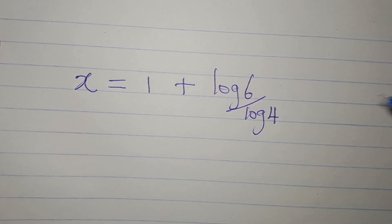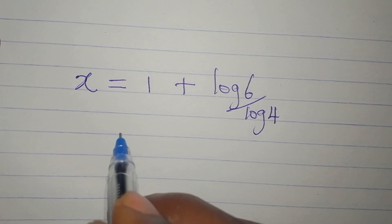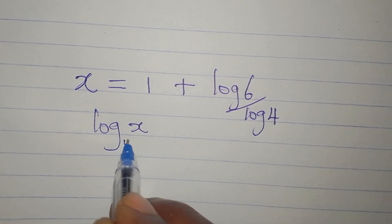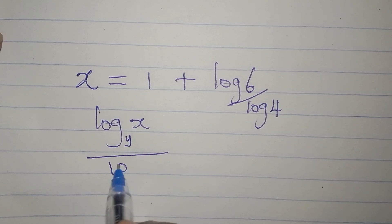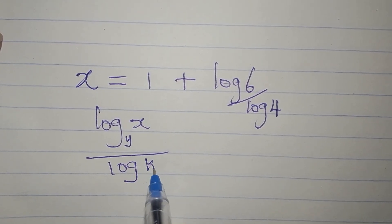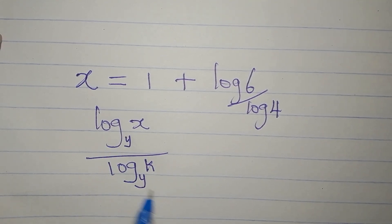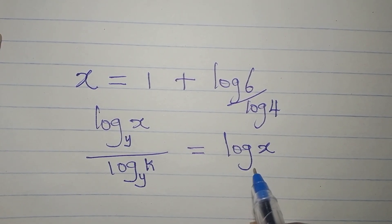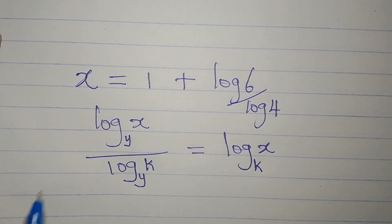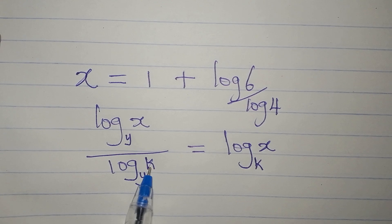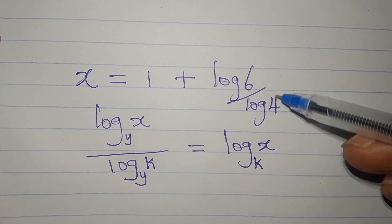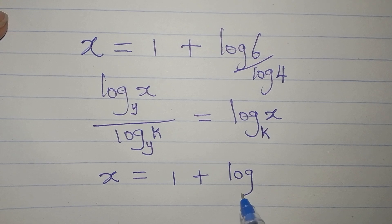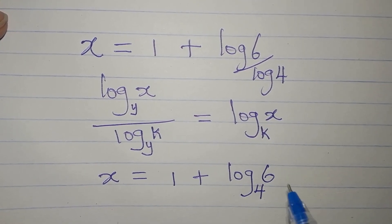Now we want to apply the change of base rule. If you have log x to base y divided by log k to base y, both have the same base, so you can combine them and have log x to the base of k — the y is eliminated. Applying this here, our x will now be 1 plus log 6 to the base of 4. This is the value of x.